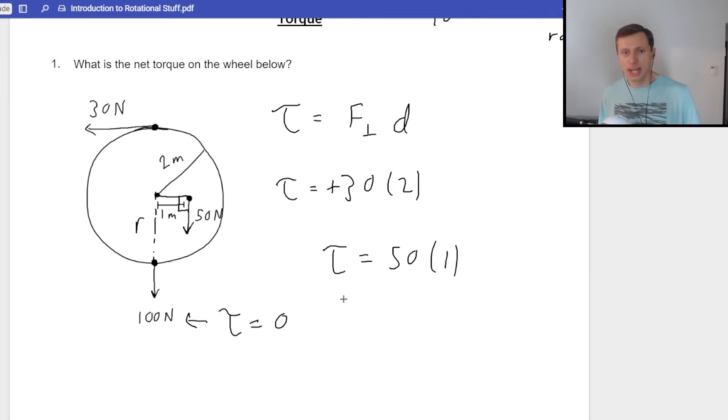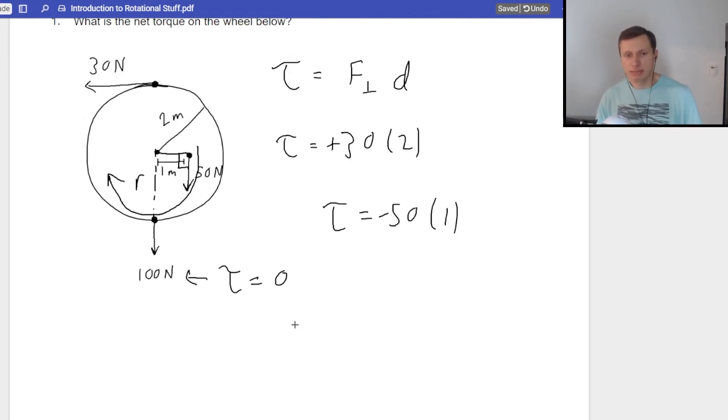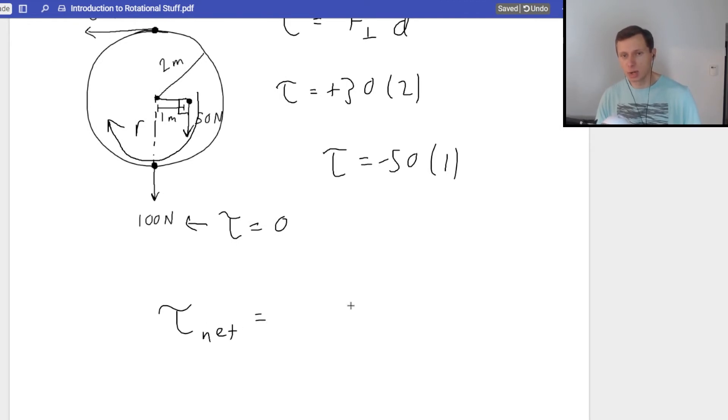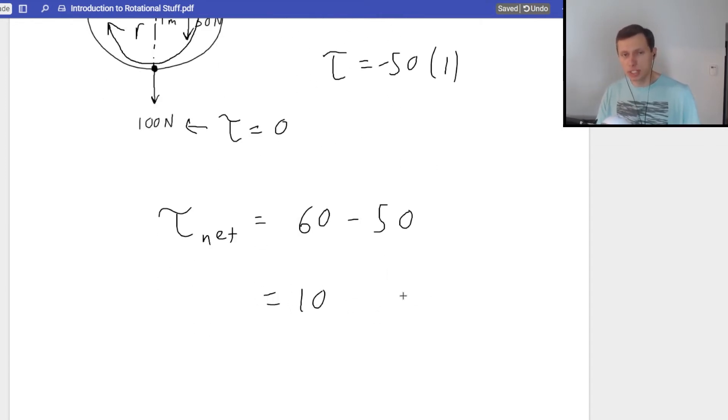So, it's 50 times one, and is it positive or negative? Well, notice this 50 Newton force, if I kind of just draw an arrow in the direction of motion, it looks like it's causing the wheel to spin clockwise. We say clockwise is negative, so it's negative 50. So, what does this mean? If I were to find my net torque, my net torque, it's going to be 30 times 2, which is 60, plus 0, which we don't care about, and then minus the 50 torque.